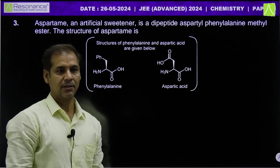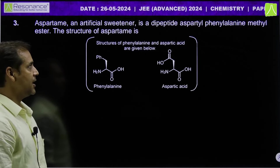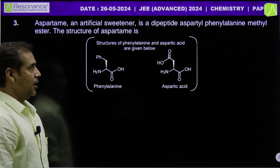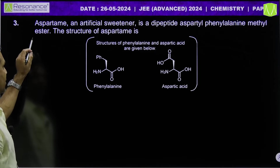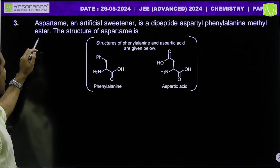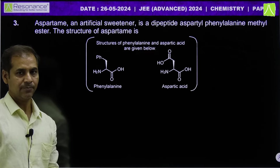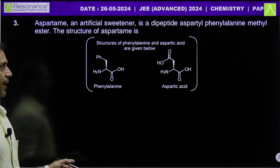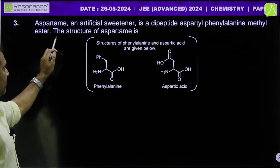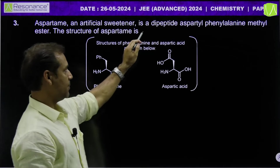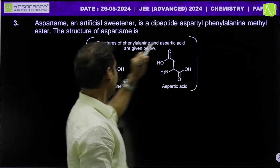Let us come to the next section of Paper 1, Chemistry, JEE Advanced 2024. I am now discussing the organic section of Paper 1. Let us take the first question of the organic section. Aspartame — aspartame is an artificial sweetener and a dipeptide.